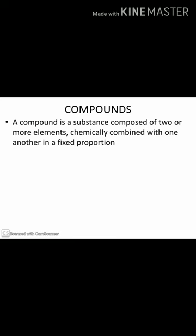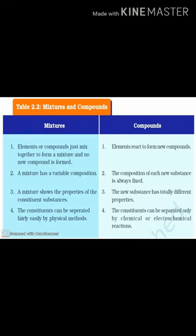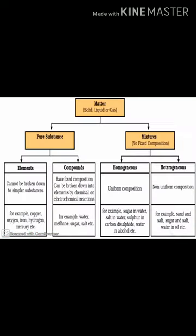A compound is a substance composed of two or more elements chemically combined in a fixed proportion. In a mixture, elements or compounds are simply mixed together — no new compound is formed and the composition is variable. Mixtures can be separated by physical methods and show the properties of their constituent substances. In a compound, a new substance with totally different properties is formed, and constituents can only be separated by chemical or electrochemical reactions.